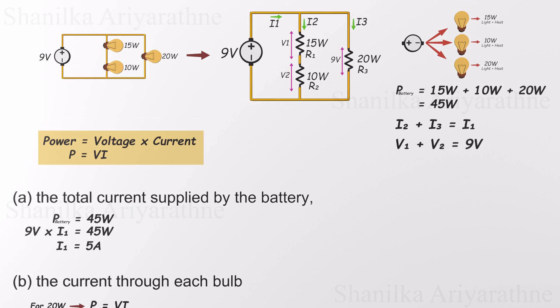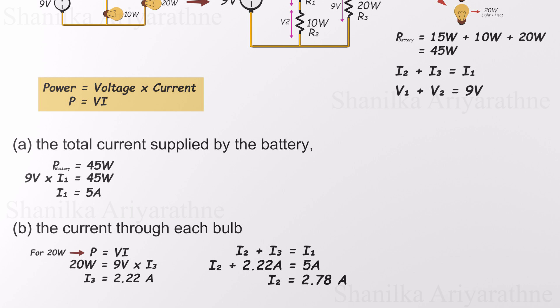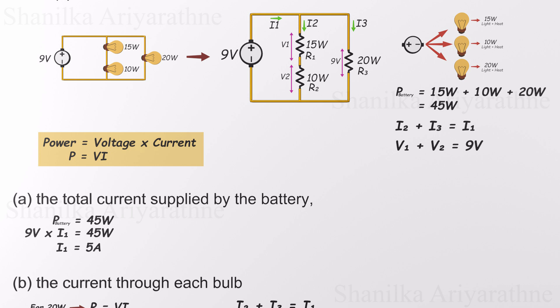Since the total current leaving the battery is 5 amps, the difference 5 minus 2.22 must be flowing through the other branch of the circuit. That gives us 2.78 amps, which is shared by the 15-watt and 10-watt bulbs in series. And remember, since those two bulbs are in series, that same 2.78 amps flows through both of them equally.